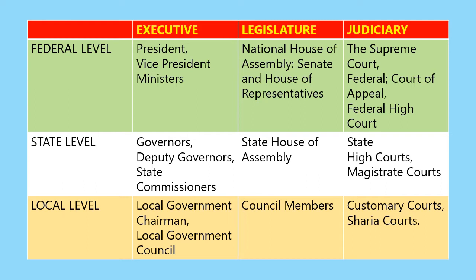There must be cooperation between the local, state, and federal governments. Cooperation among the different levels of government is very important because it ensures that all the affairs of the country run smoothly. When the different levels of government cooperate successfully, the country becomes better for everyone. The state and the local government receive grants from the federal government to run their affairs, while the local, state, and federal governments work together by making and enforcing laws that deal with crime and providing basic services that the people need.